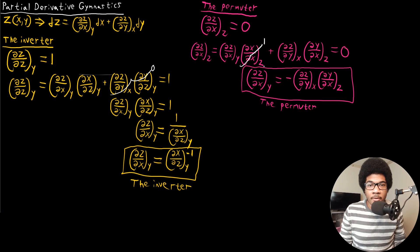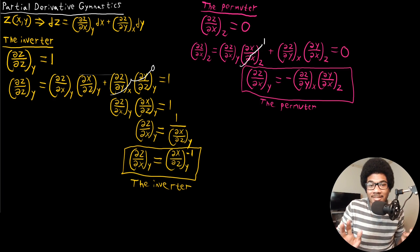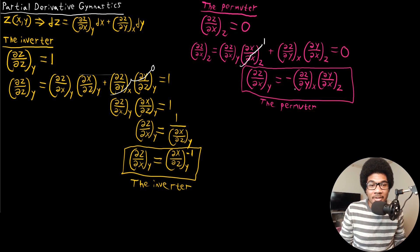We call it the permuter because it really does amount to a permutation of the variables. The right-hand side is an expansion of the left that includes the variable y. While it's not exactly cross-multiplication, thinking of it that way helps you remember how to collapse or expand these derivatives in different situations.